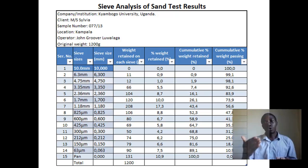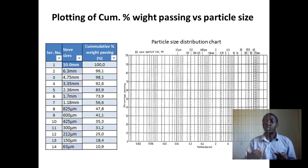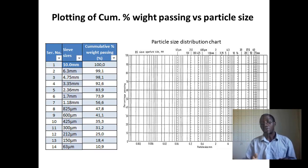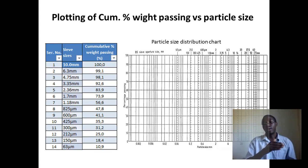Looking at the table, these are the results we have been calculating. Using the above examples, the table can be filled in accordingly. Using the values in the table, the grading curve is plotted on the particle size distribution chart, whereby cumulative percentage passing is plotted on the y-axis against the particle size (the sieve size) on the x-axis.